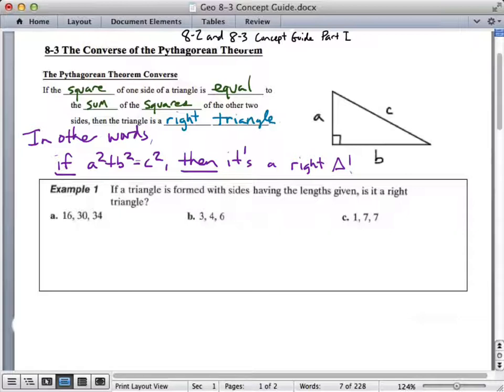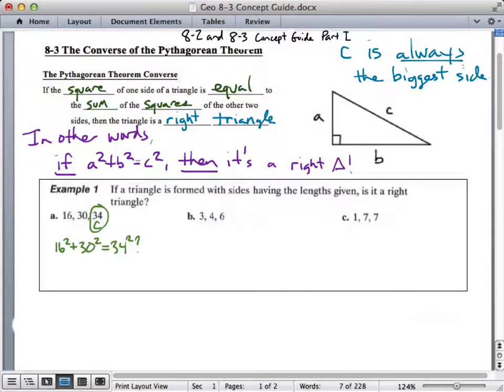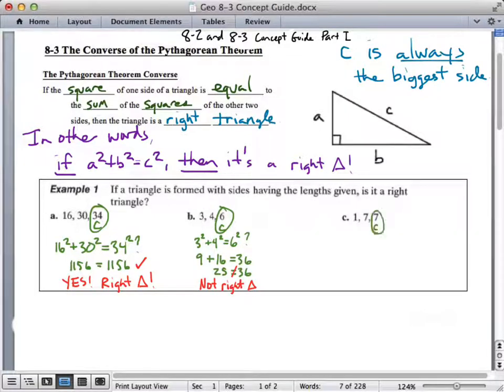If a triangle is formed by these sides, is it a right triangle or not? Well, which one would be the hypotenuse potentially? Well, the biggest one. 34. C is always the biggest side. So does 16 squared plus 30 squared equal 34 squared? Yep, it sure does. So that is a right triangle. 6 is the potential hypotenuse. It's the longest side. How does 3 squared plus 4 squared compare to 6 squared? Not equal. Not a right triangle. These are both the same, so one of these would have potential to be the hypotenuse. 1 squared plus 7 squared is equal to 7 squared. Well, of course not. It's not a right triangle.